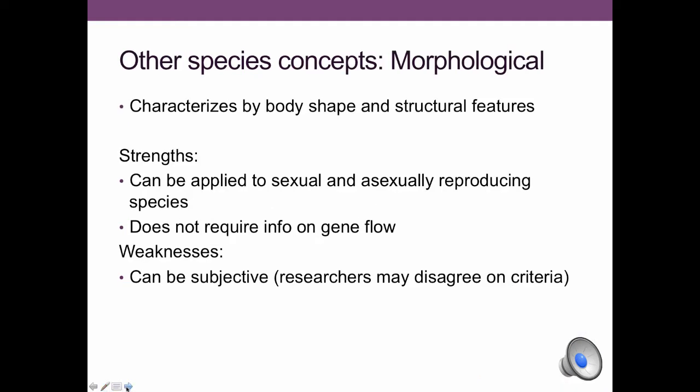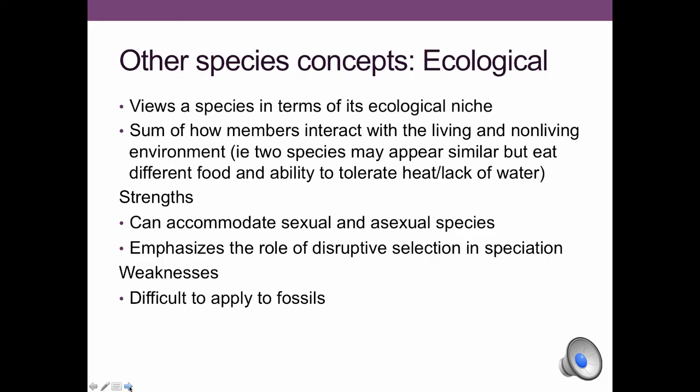We can also talk about a morphological species concept that characterizes organisms by body shape and structural features. It's useful because we can apply it to sexually and asexually reproducing species and it doesn't require any info on gene flow, so we can use it on fossils — but it's subjective. Many insects classified morphologically are now recognized as distinct species when we use better methods like DNA.